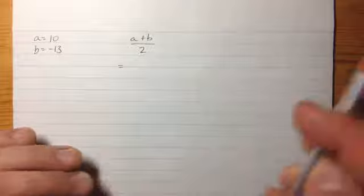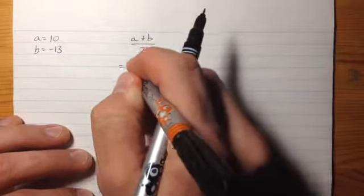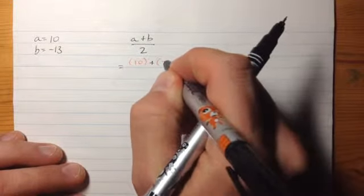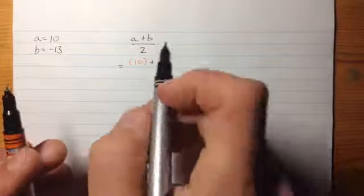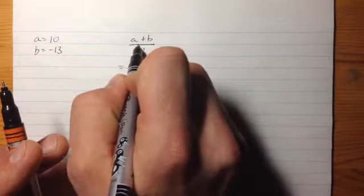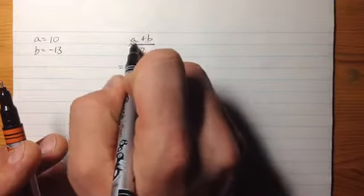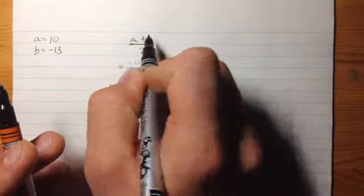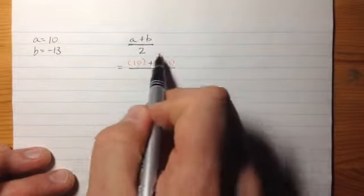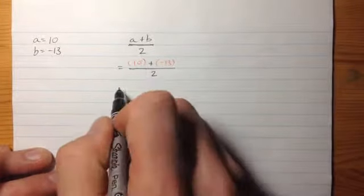And so I will substitute in these values, and as before I will use brackets. There's the value for a, and now I will substitute in the value for b, which is negative 13, divide that whole thing by 2. And you see how my division bar extends so that a plus b are sort of bracketed. They're an expression by themselves on top here.